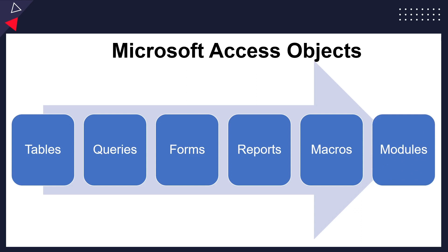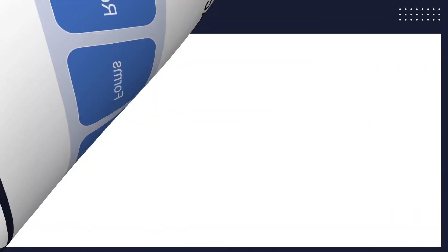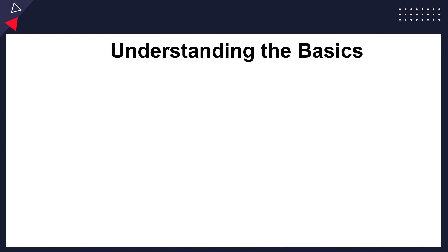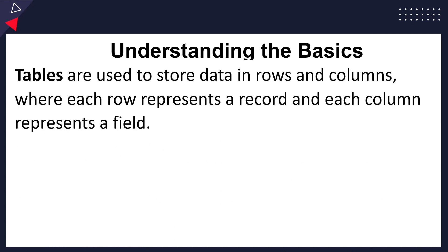To give you an understanding of the basics: a table, as the primary database structure, stores data in rows and columns. Each row represents a record and each column represents a field, as I'll be showing you. So data is stored in columns and rows within a table.